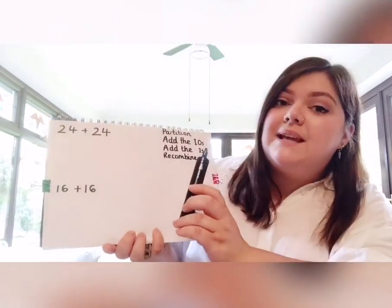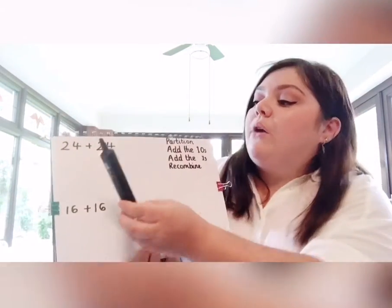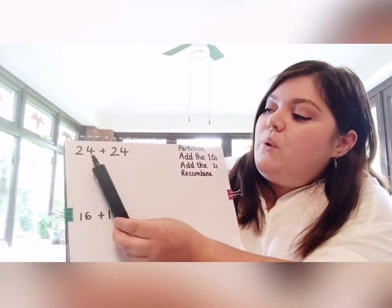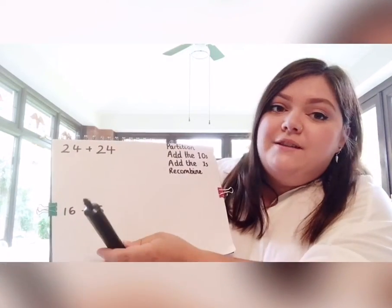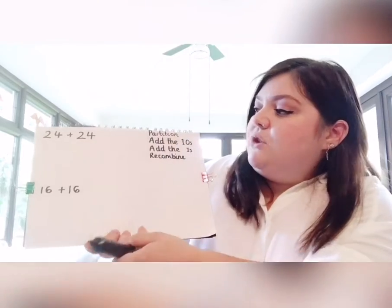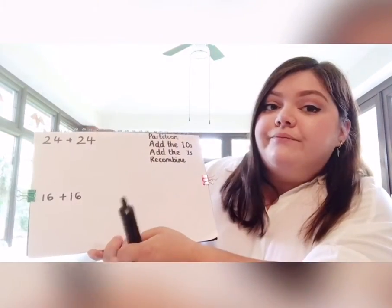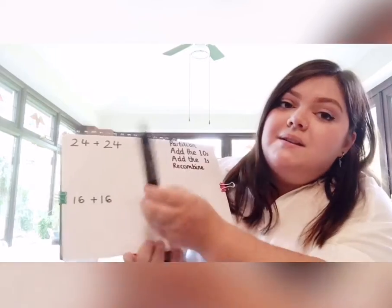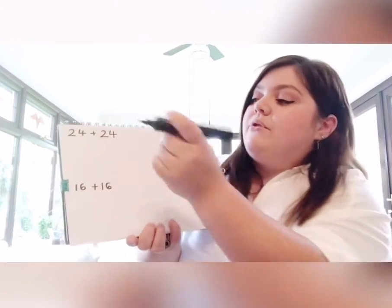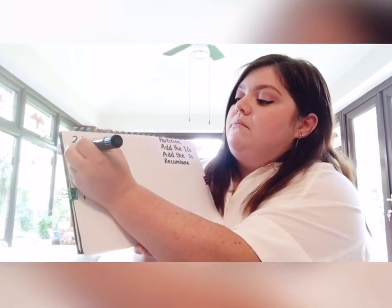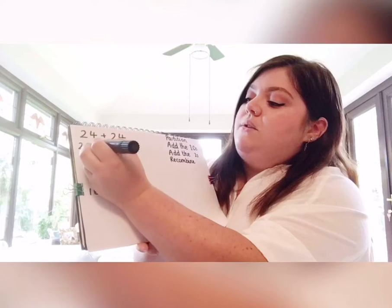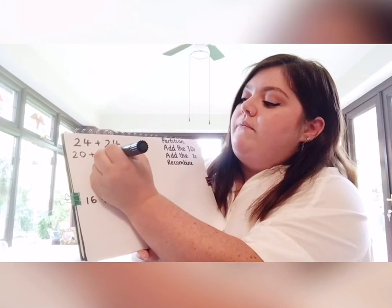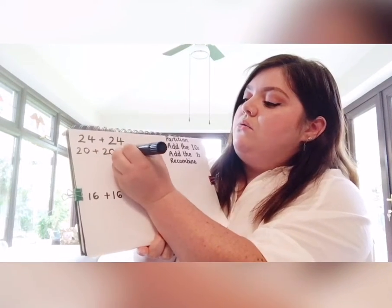So the number today — we're going to double 24. So 24 add 24. My first step is to partition — I want to see my tens and my ones being separate. So 20, two tens, add 20, another two tens, equals...